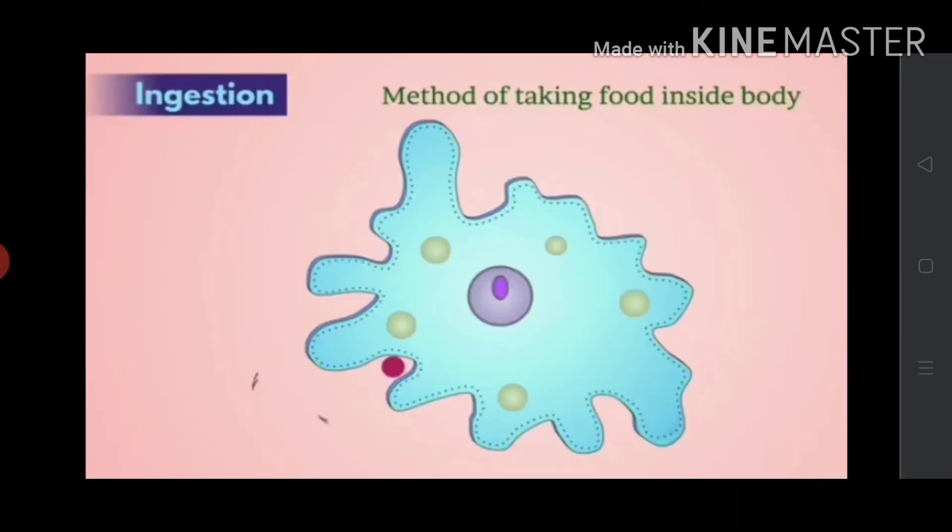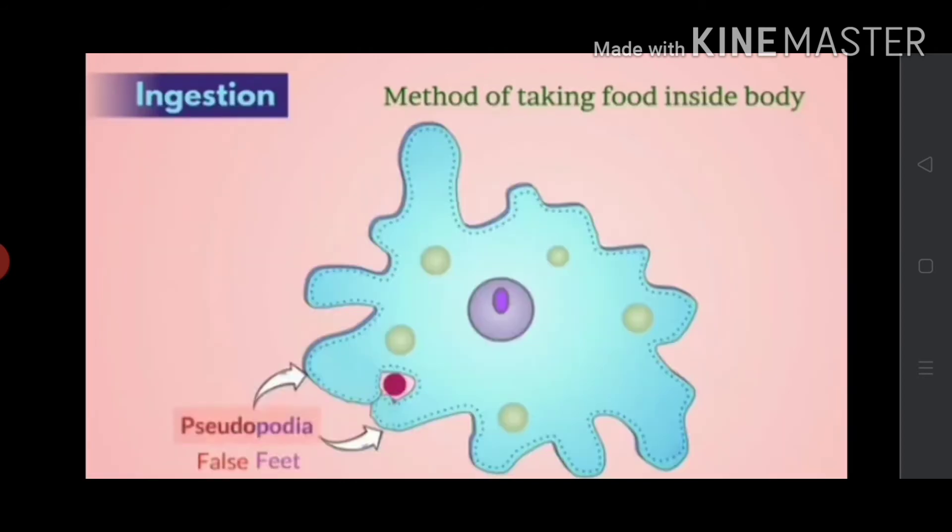Amoeba moves continuously. Whenever it senses the food particle, it spreads a finger-like structure around the particle. This structure is called pseudopodia or false feet of amoeba. This pseudopodia helps with movement and capture of food.